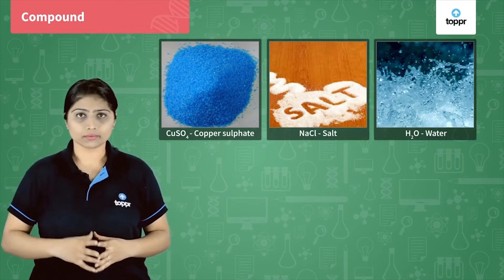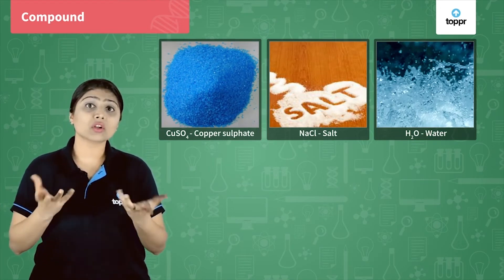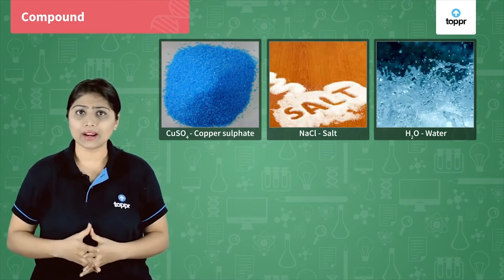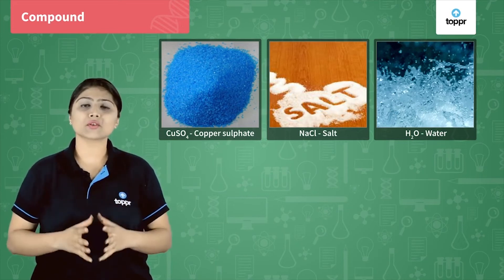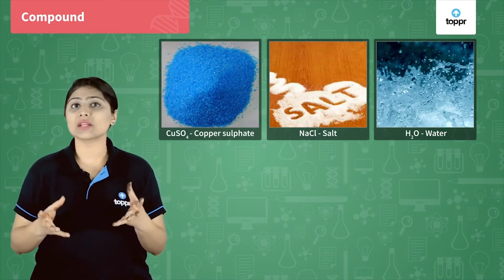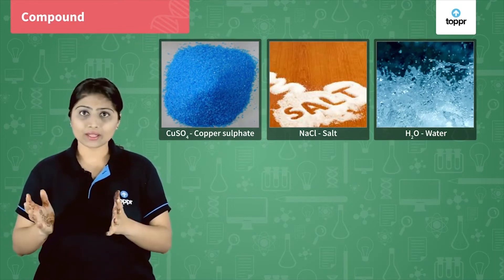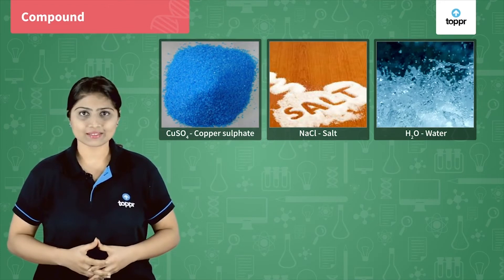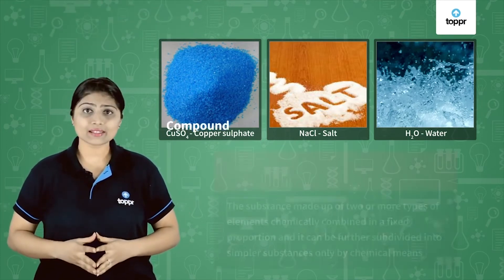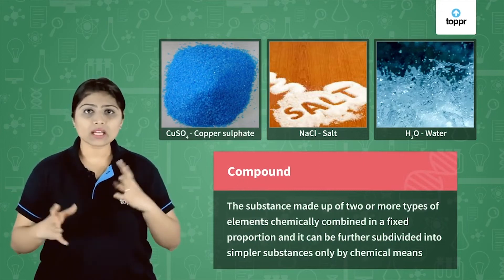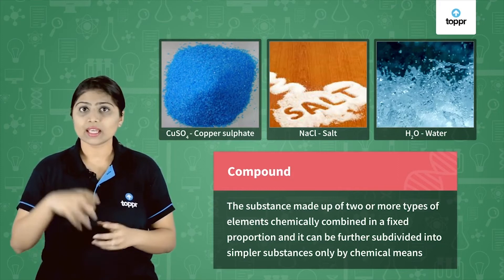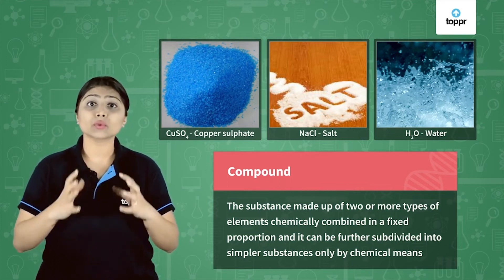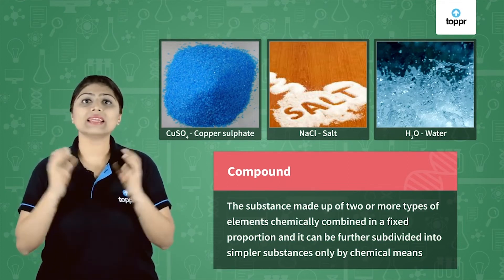Suppose we have water in a glass and we need to separate hydrogen and oxygen. Is it possible to just throw out hydrogen and oxygen by hand? No. To separate hydrogen and oxygen from water, we require electrolysis — it's a chemical process. So a compound can be subdivided into its constituent elements only by chemical means. We can define a compound as a substance which is made up of different kinds of elements combined chemically in a fixed proportion, and which can be subdivided into its constituent elements only by chemical means.